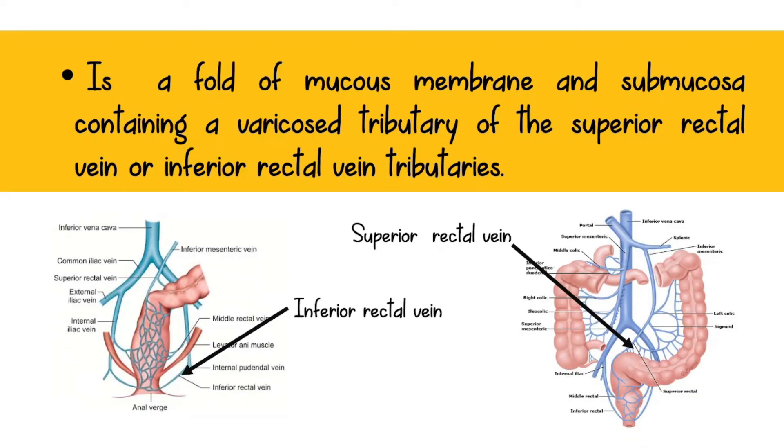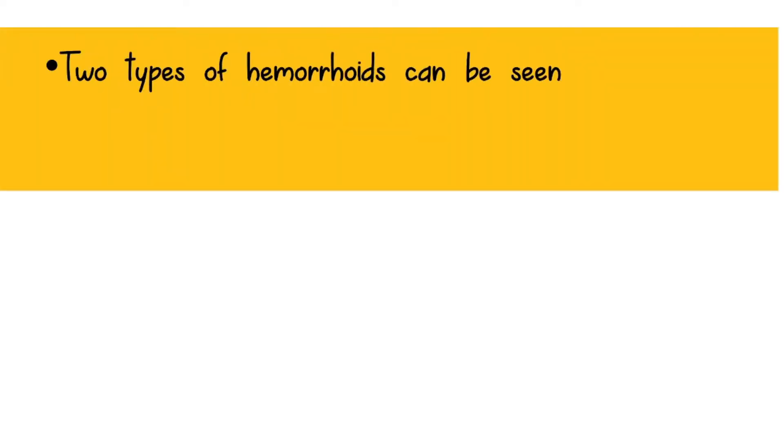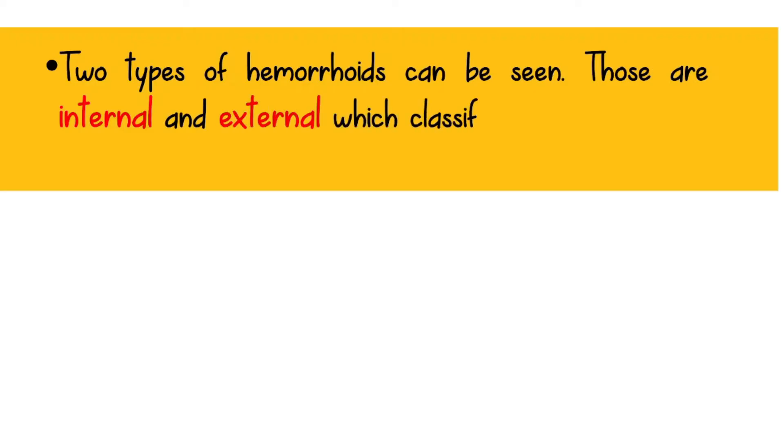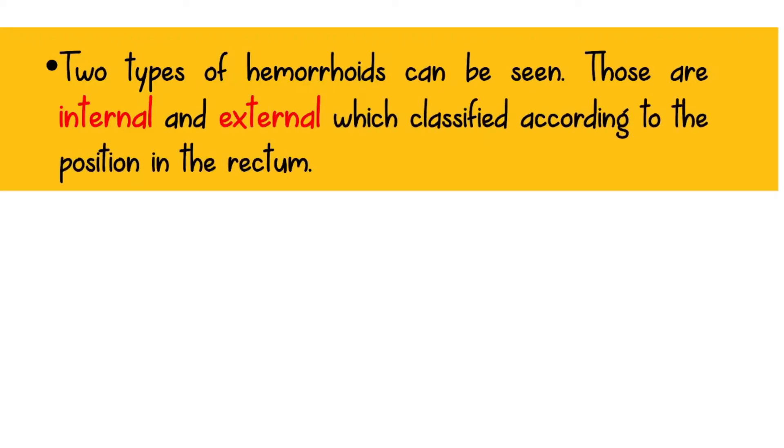Two types of hemorrhoids can be seen: internal and external, which are classified according to their position in the rectum.